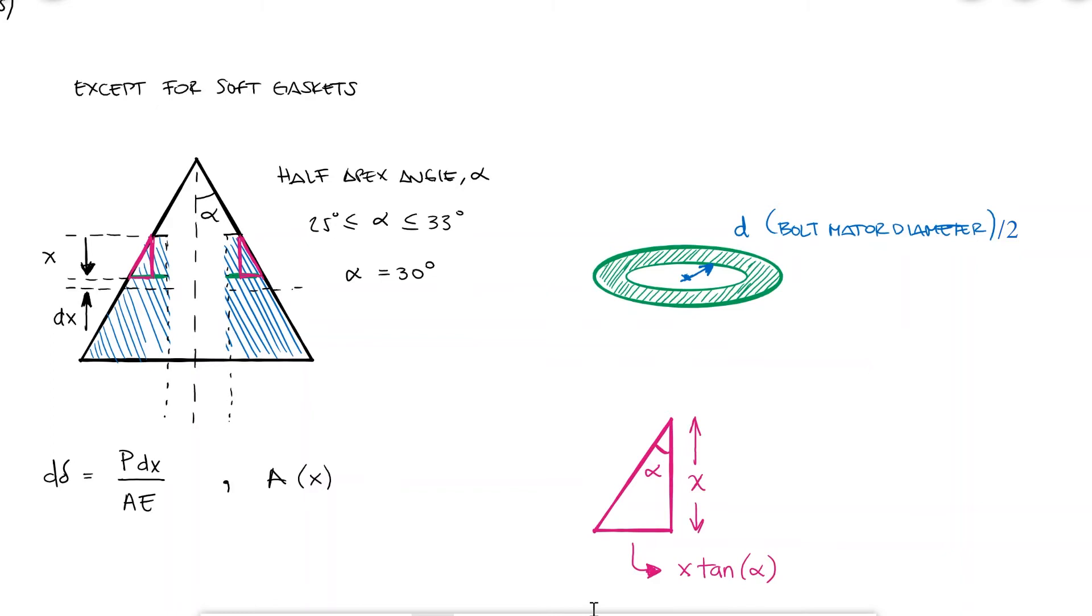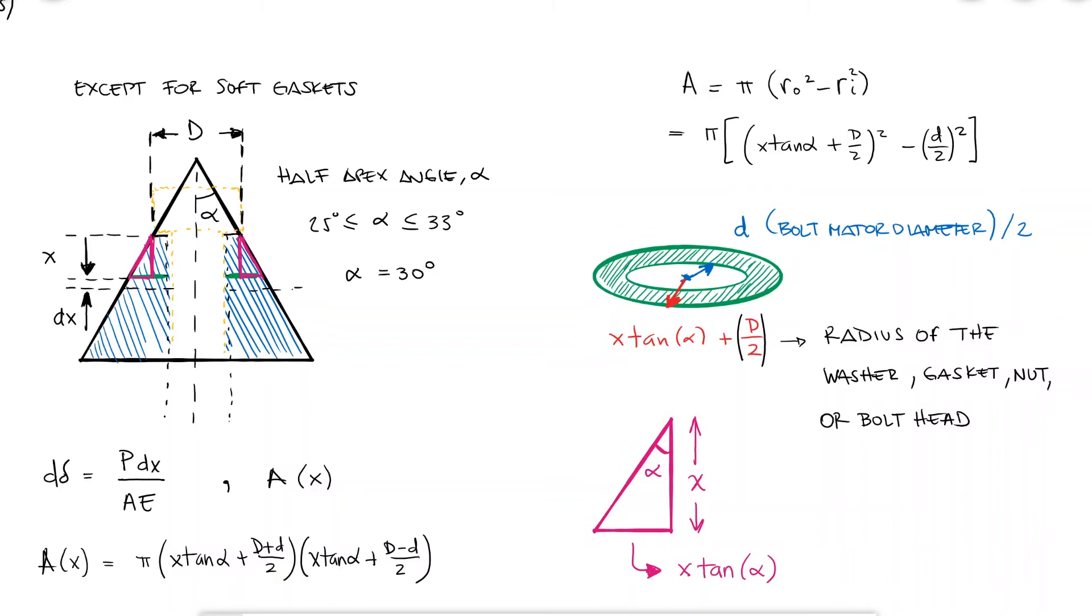The outer radius can be calculated by adding the opposite side of the triangle on each side using the tangent function and the radius of the washer, gasket, or bolt head. We can use these dimensions and the equation for the area of a ring to find an expression for the area as a function of x.